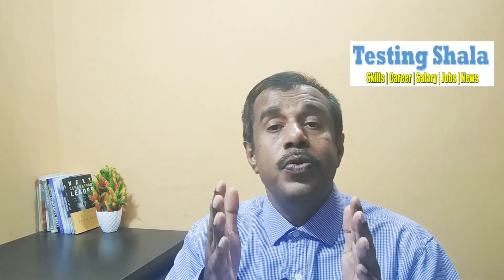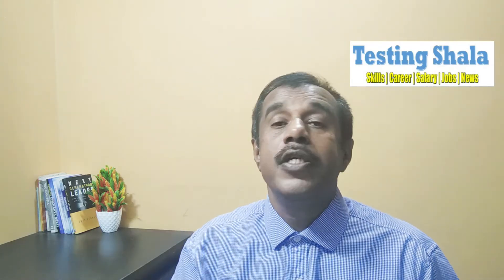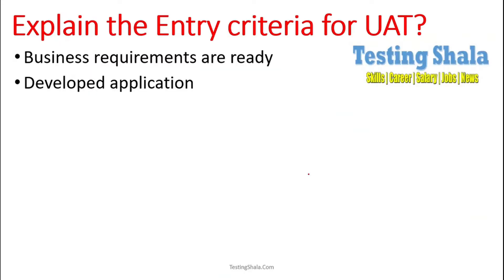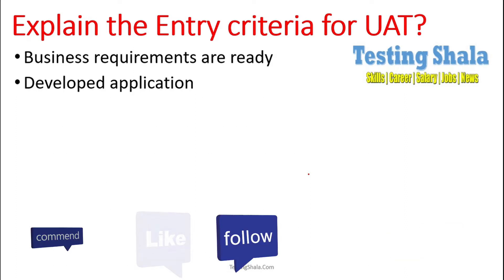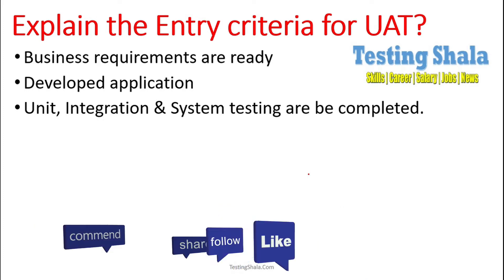To perform UAT, first of all, the business requirements should be clear. Using those business requirements, some application should have been developed already. So once the development is done and the application is ready, then unit testing should be done, integration should already be done, and system testing should already be done.